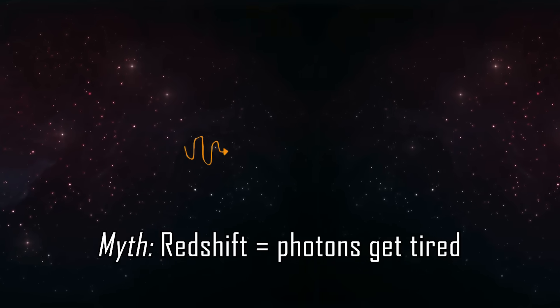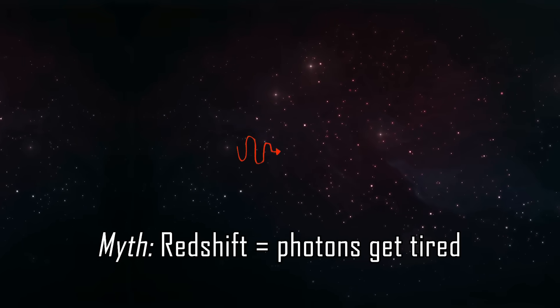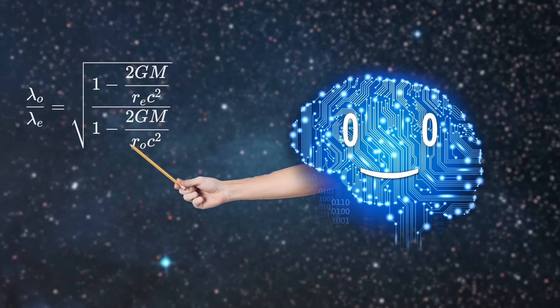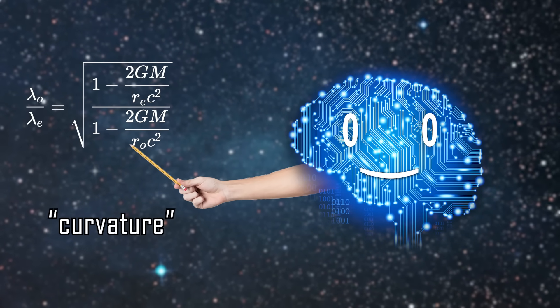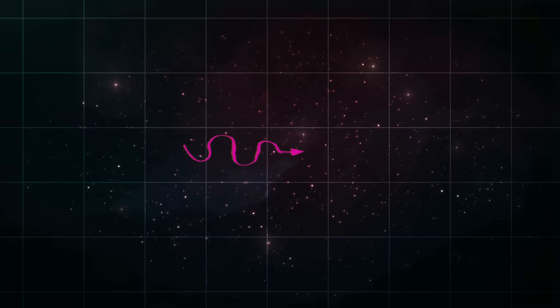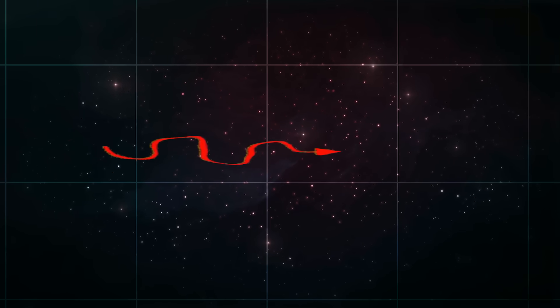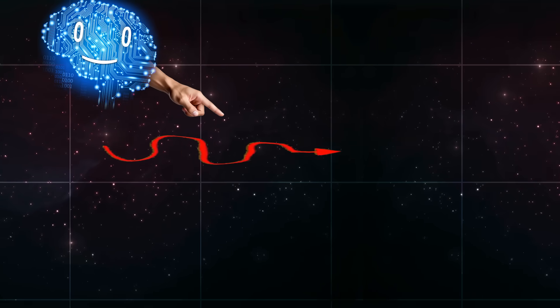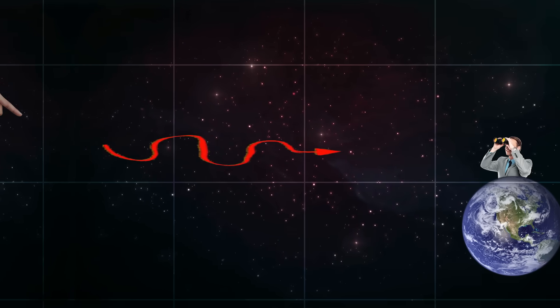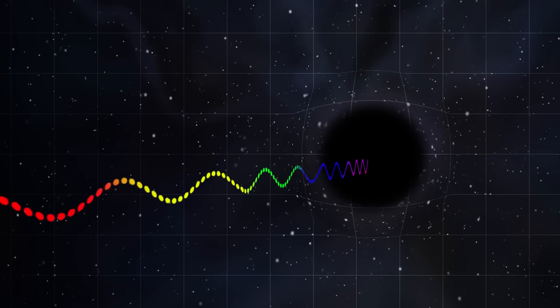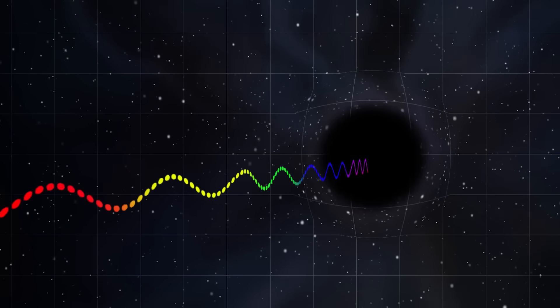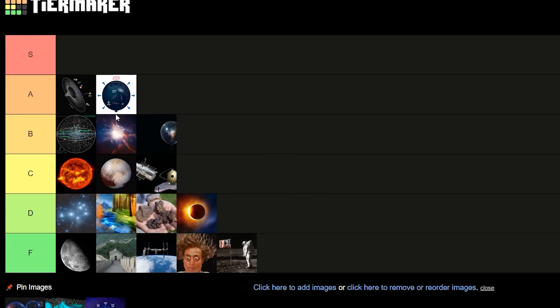Redshift means photons get tired and lose energy en route. In general relativity, light's wavelength is affected by the geometry of space-time itself. When light travels across an expanding universe, the space between its wave crests stretches. That extra distance literally stretches the wavelength, so when it reaches us it looks redder. But it can also lose energy when trying to climb out of a deep gravitational well such as a black hole or your mother.